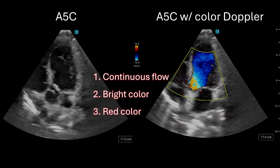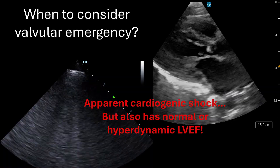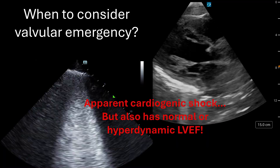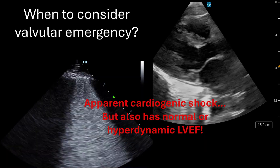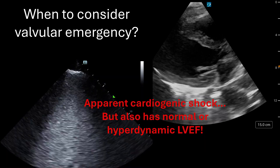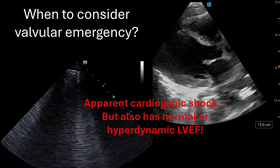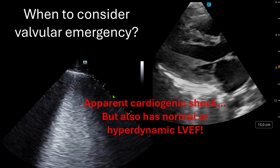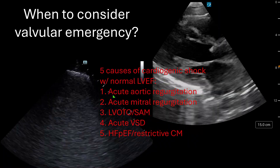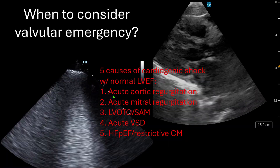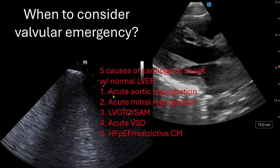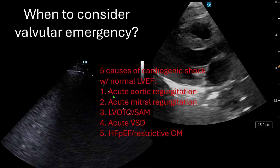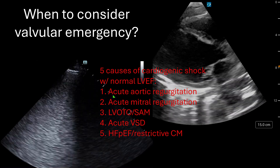Let's discuss when we should even consider a valvular emergency. If a patient is in apparent cardiogenic shock with low blood pressure, inadequate tissue perfusion, and B-lines on lung ultrasound, but also has a normal or hyperdynamic ejection fraction, this is when I consider a valvular emergency. We typically think of cardiogenic shock from systolic dysfunction or poor ejection fraction — in one large study of over 1,700 patients, average EF was 20% in cardiogenic shock. The five causes of cardiogenic shock with a normal EF are: acute aortic regurgitation, acute mitral regurgitation, LVOT obstruction with systolic anterior motion of the mitral valve, acute VSD, and HFpEF or restrictive cardiomyopathy.